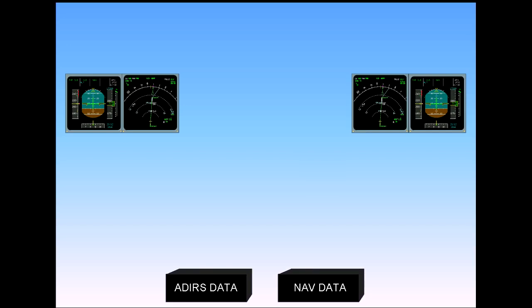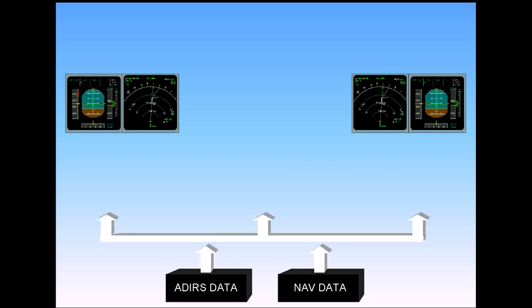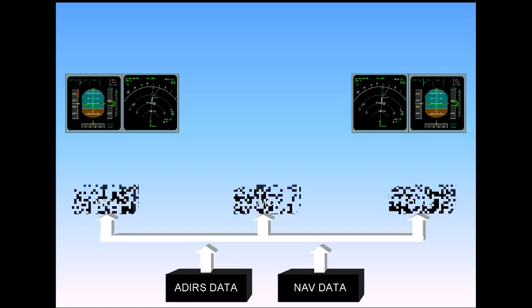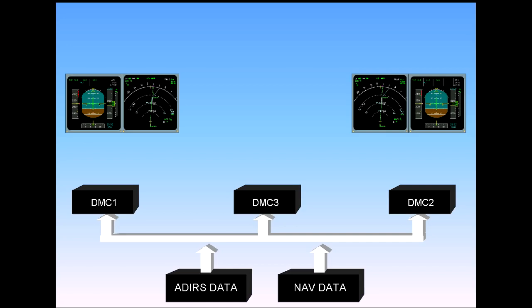Let's go back to the EFIS system. For the EFIS displays, data from the Air Data and Inertial Reference System, ADIRS, plus navigation data from the Flight Management and Guidance System, FMGS, is fed directly to three Display Management Computers, DMCs.